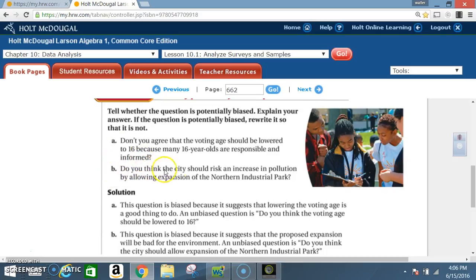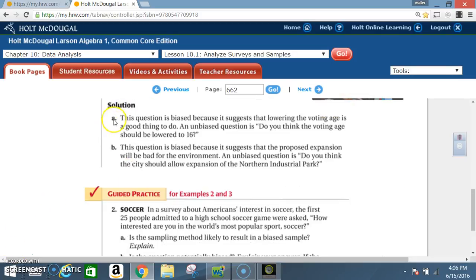Question B: Do you think the city should risk an increase in pollution by allowing expansion of the northern industrial park? Solution to question A: This question is biased because it suggests that lowering the voting age is a good thing to do. An unbiased question is: Do you think the voting age should be lowered to 16?